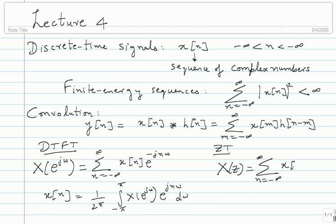The Z transform is the sum from minus infinity to infinity of x(n) z power minus n, where z is a complex number. You can see this is a generalization of the DTFT. You can take the Z transform and look at it only on the complex number z with magnitude one — z equals e power j omega — which is the set of all complex numbers with magnitude one, the unit circle. On that, you get the DTFT.